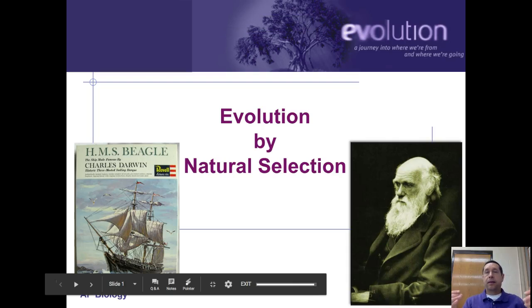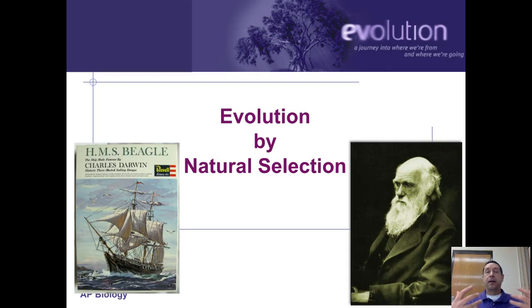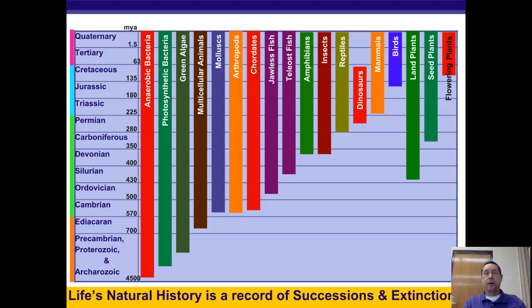In this video we're going to look at the current theory that explains how evolution occurs, which is evolution by means of natural selection, proposed by Charles Darwin.